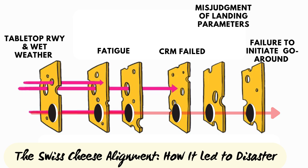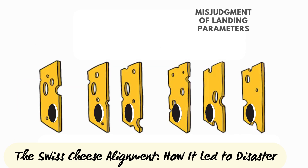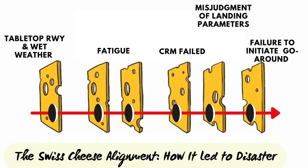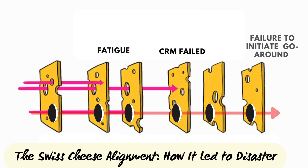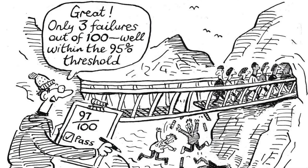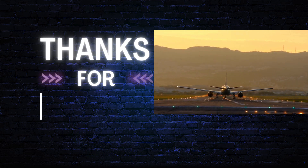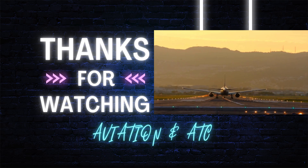James Reason's model provides a framework for understanding how multiple small failures in different areas of a system can align and cause accidents. Each layer of defense is like a slice of swiss cheese — the holes represent vulnerabilities due to human error, poor design, or unforeseen conditions. Importantly, Reason's model teaches us that human error is not a single point of failure, but rather part of a chain of interacting failures within the broader system.